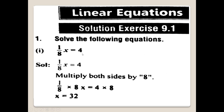Question number 1: 1/8 x is equal to 4. اس کو ہم نے solve کرنا ہے، یعنی variable کی value نکالنی ہے۔ Multiply both sides by 8. Left hand side پر 1/8 multiply by 8 — 8 اور 8 cancel ہو جائیں گے، تو x رہ جائے گا۔ x is equal to 4 multiply by 8, which is 32. تو x کی value 32 آ گئی۔